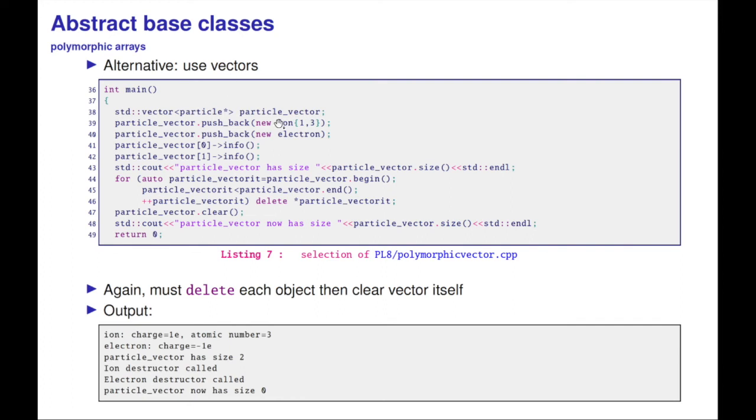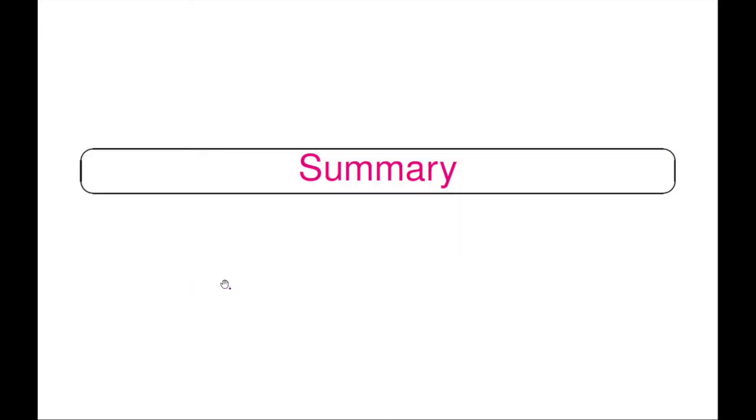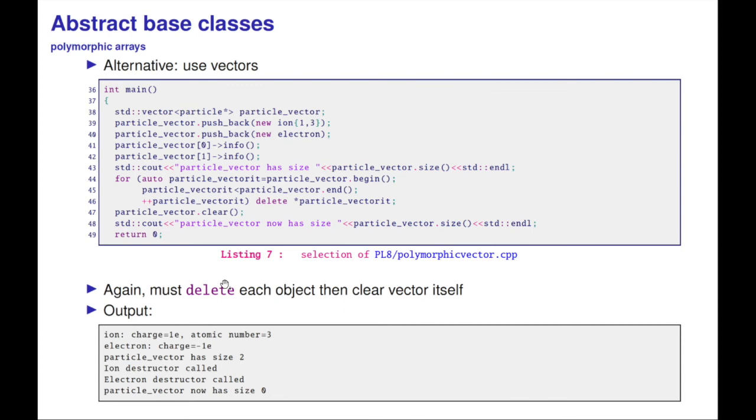There's an alternative, of course. It might be better to use vectors, but it works exactly the same way. You push back these objects. You can call the info. And I can then iterate over the vector to delete all the stuff, delete each object, then clear the vector itself. You may want to check that code to see what it really does.